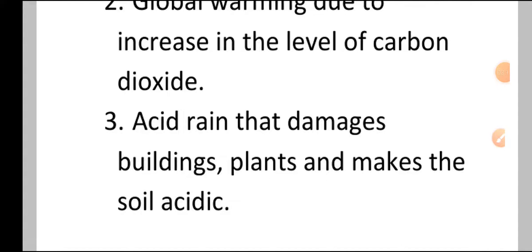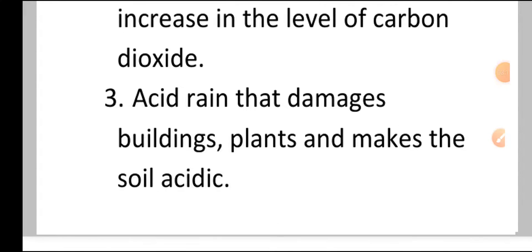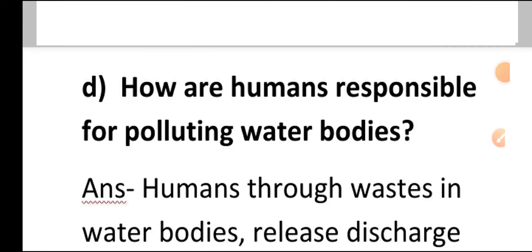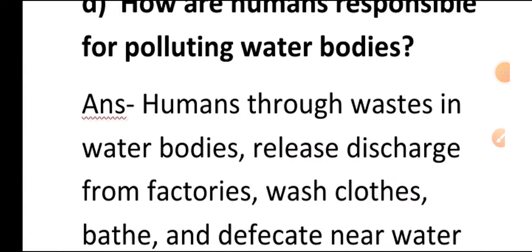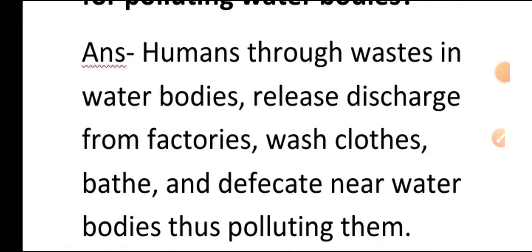Number three: acid rain that damages buildings, plants and makes the soil acidic. Next question: how are humans responsible for polluting water bodies? Answer: humans throw waste in water bodies, release discharge from factories, wash clothes, bathe and defecate near water bodies, thus polluting them.